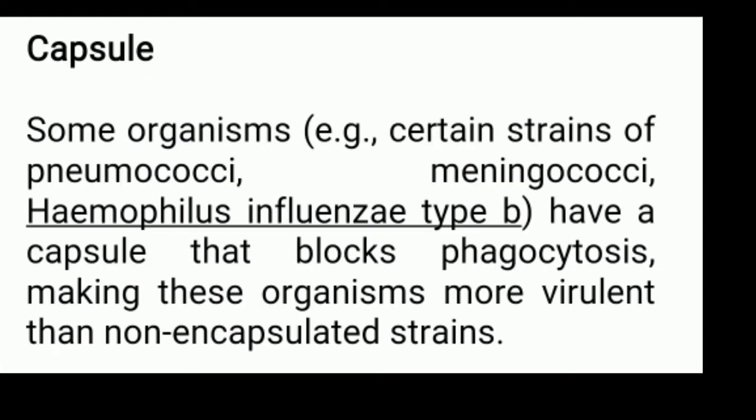First, we will talk about the capsule. Some organisms, for example, certain strains of pneumococci and meningococci, and Haemophilus influenzae type B, have capsules that block phagocytosis, making these organisms more virulent.